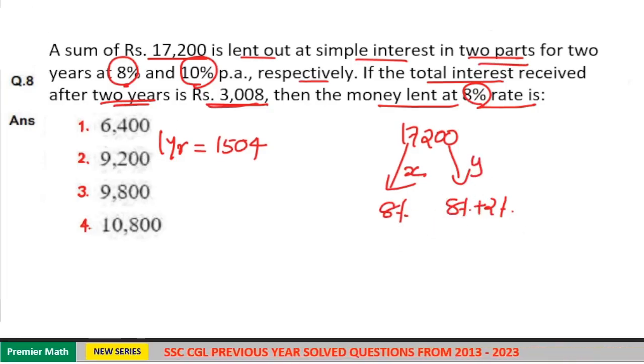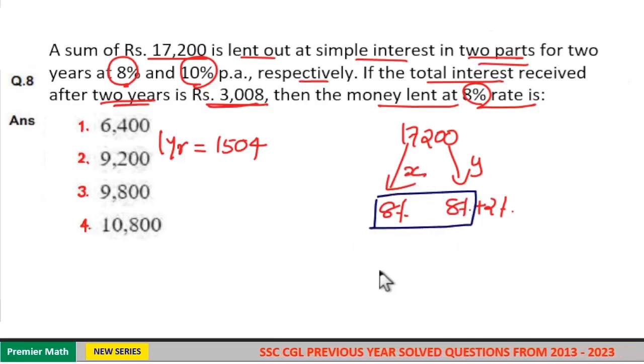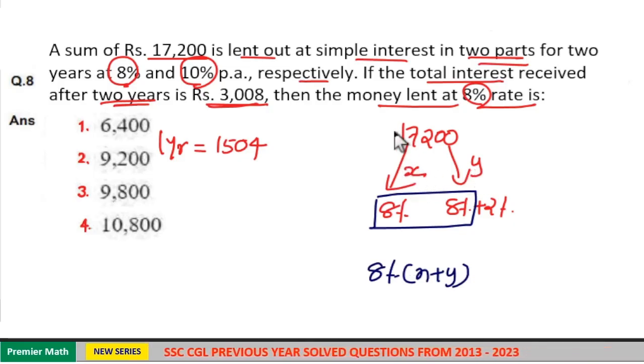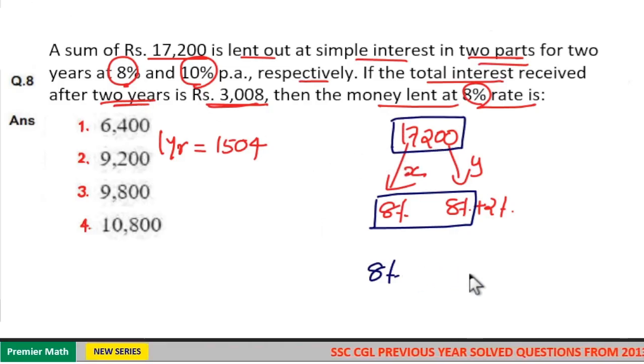Now, 8% is common here. That is, if you take 8% of X and 8% of Y, which is equal to 8% of X plus Y. Here, X plus Y is equal to 17,200. So, take 8% of the sum 17,200.